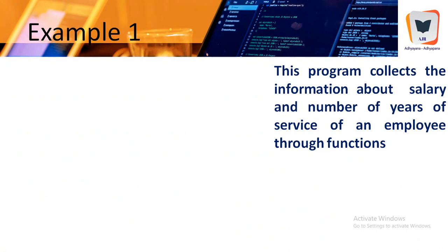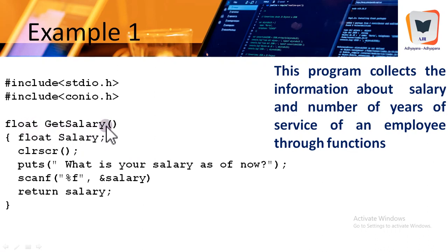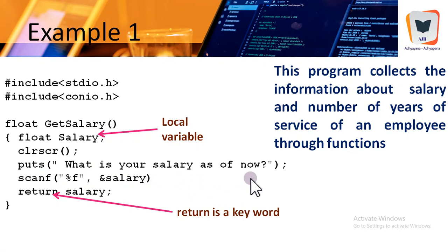This program is an example of the second category of functions. It collects information from an employee about their salary and duration of service. The functions are defined before main so they become global functions and no prototype declaration is required. The function returns a float value; its name is get_salary, which reflects what it does. Float salary is a local variable — it cannot be accessed by any other function.